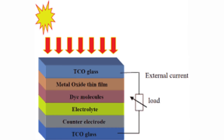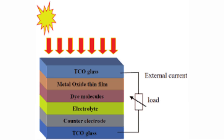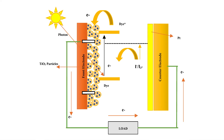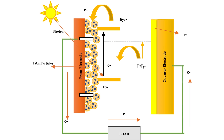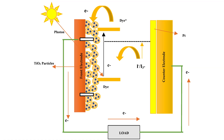The dye's role is to absorb light and inject electrons into a semiconductor material, typically titanium dioxide, to generate electricity. From the excited state, the electrons are injected into the conduction band of the TiO2 semiconductor, which acts as the photoanode.